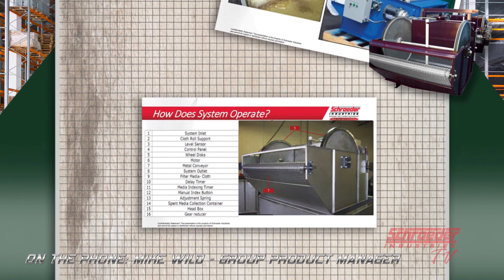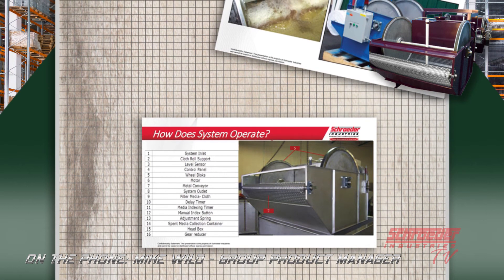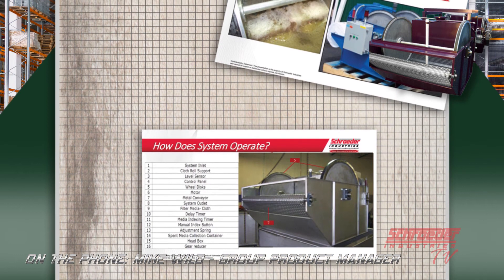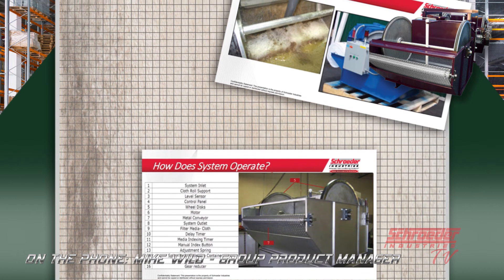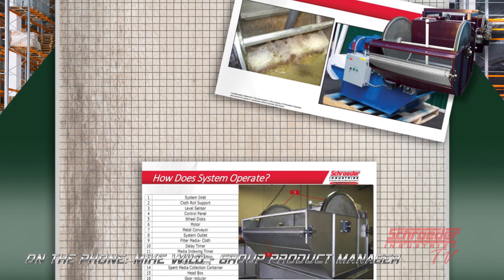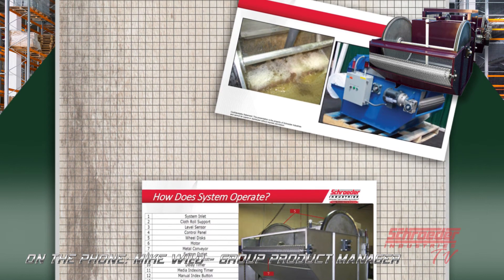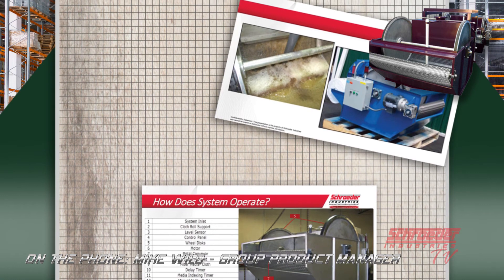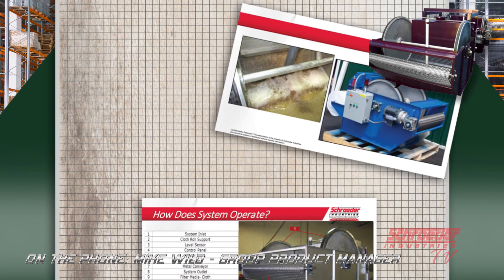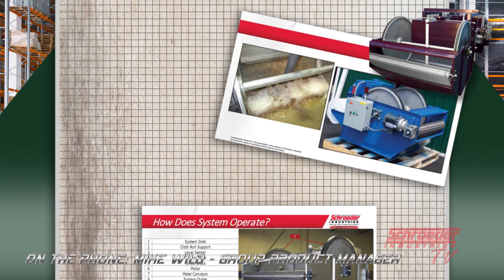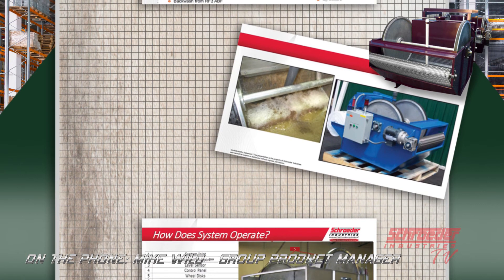Looking at the other end, number seven is your stainless steel conveyor. You can see the rubber on the wheel discs that keep the media pressed against the conveyor belt — so when it increments, it keeps the dirt and water inside the trough that's created. On the left side, as water comes in onto the media, it's collected in that little trough created by the wheels and the conveyor belt.